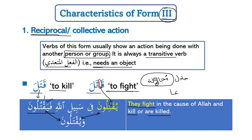فيَقتلون: and they kill; ويُقتلون: or they are killed. Be careful: whenever you see ضمة on the مضارع there might be confusion about whether it is Form 2, 3, or 4. Pay extra attention — if there is an extra Alif it is Form 3, extra تشديد is Form 2, extra همزة is Form 4. If none of these are present, then it is the passive form of the مضارع.